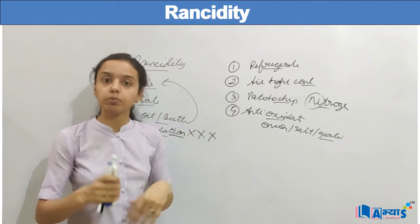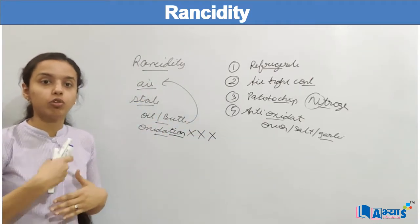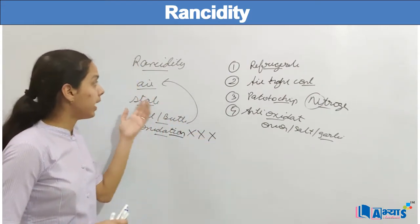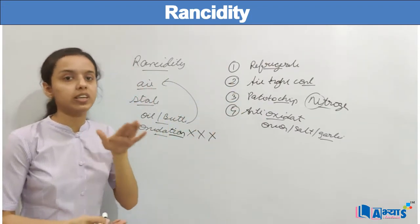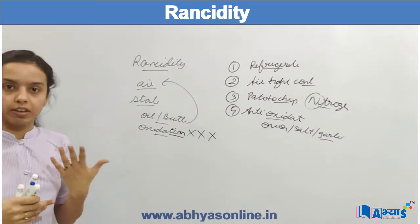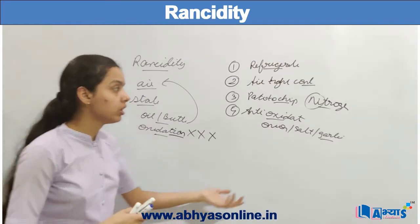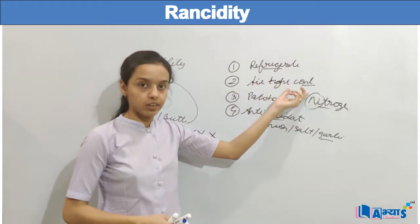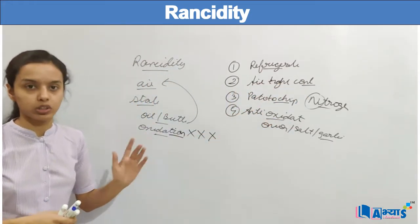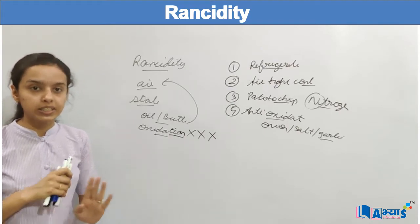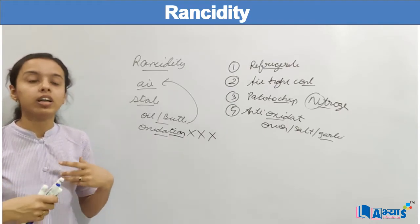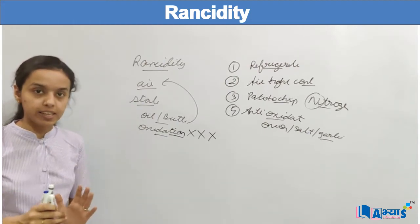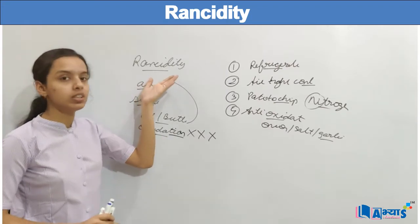These substances are added to keep the food fresh for a longer period of time. This was everything about rancidity, and we have discussed the four steps by which we can reduce rancidity: we can use a refrigerator, or nitrogen gas, or airtight containers, or food items like antioxidants. We should never use stale food because it can harm your liver. We should always protect ourselves and eat fresh food.